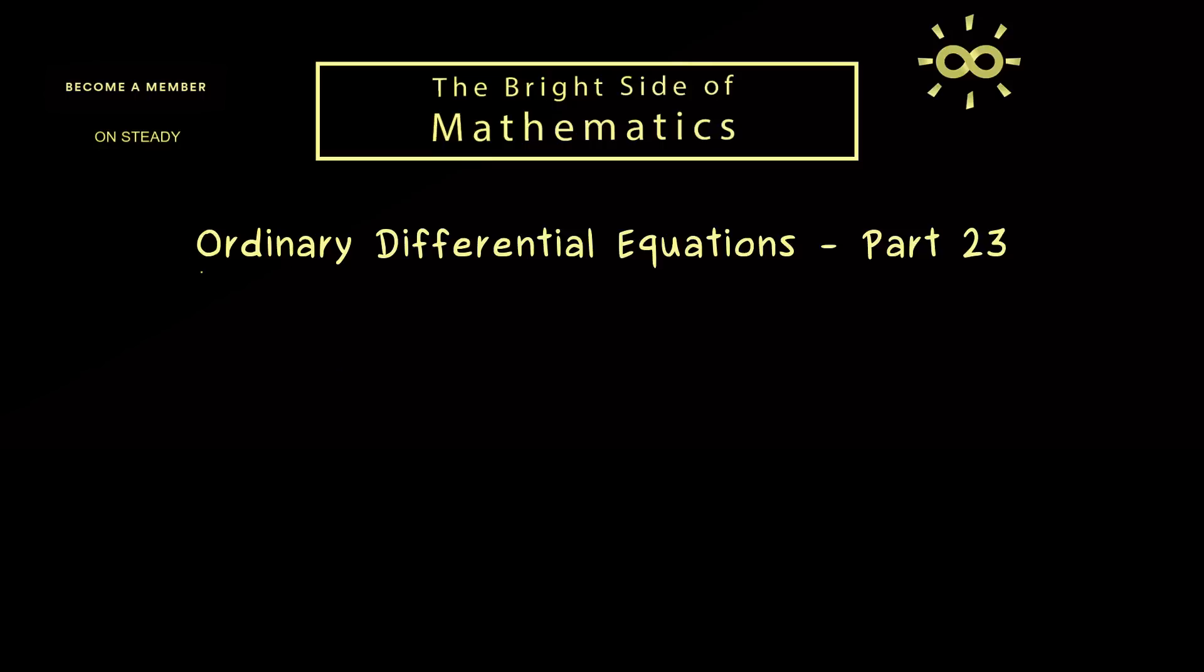Hello and welcome back to Ordinary Differential Equations, the video series where we talk a lot about differential equations, how to solve them and the theory about them. And in today's part 23, I finally want to show you an example of how we can solve a system of linear differential equations. In particular, we will look at a 2x2 system which is homogeneous and autonomous. And as you might already know, this means that we have to calculate the so-called Matrix Exponential.